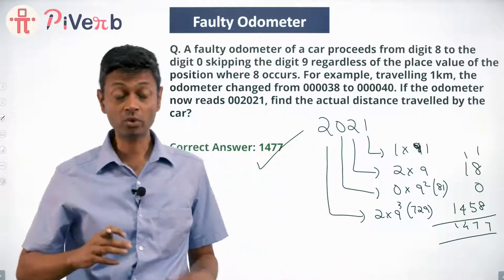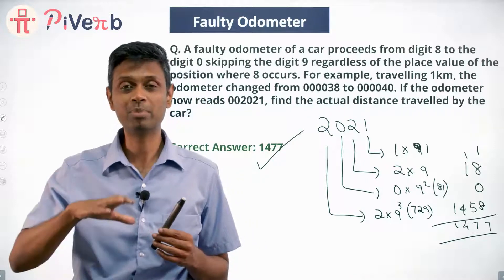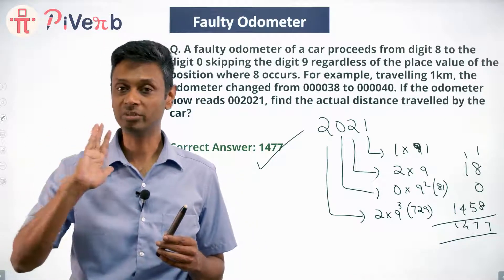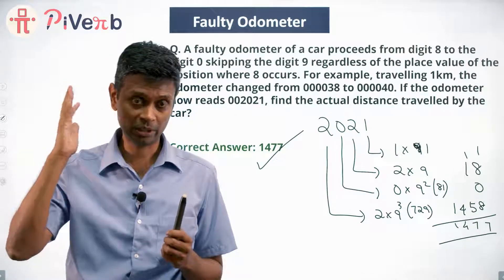Effectively, that question has found an elaborate way to say, do this entire math in base 9, not in decimal. In base 9, you have 1s place, 9s place, 81s place, 729s place.